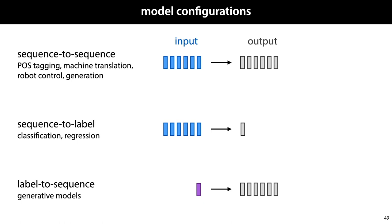Here are three basic configurations we may want to build. We may want our data as a whole to map an input sequence to an output sequence, but we may also want a sequence-to-label model, for instance, if we're doing sequence classification. And finally, there are some settings where we want to take a single vector as an input and generate a sequence.